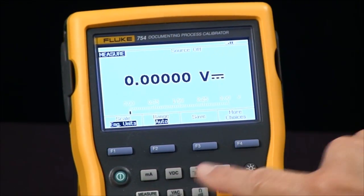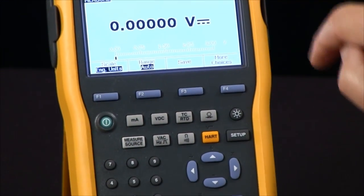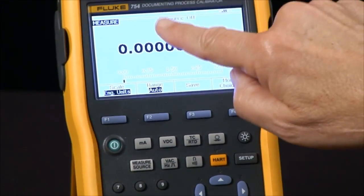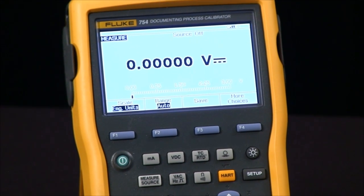There are three screens: measure, source, and the split screen that has measure and source. So we're in the correct screen to measure an RTD.